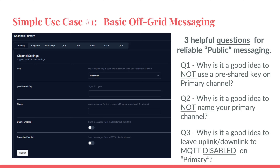Second, why is it a good idea not to name the primary channel? It defaults to 'primary' — if you change the name, nobody will know that you're there. Leave everything on primary as set to default. Finally, there is a function called MQTT. Best practice is to leave this disabled. MQTT is a mechanism that allows you to uplink or downlink information over the internet — if your goal is local communications, do not become dependent on MQTT. For example, if you see people in Texas appearing on your local network, that means somebody has enabled MQTT and is backhauling information over the internet — that's not off-grid messaging.